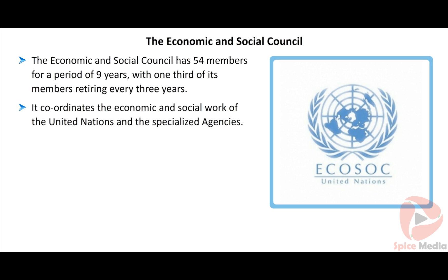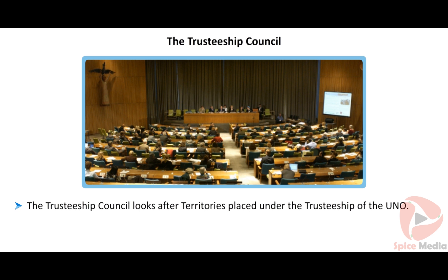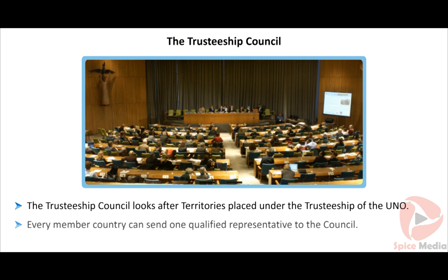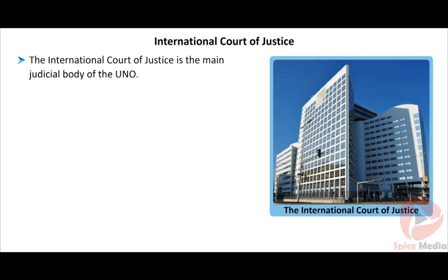The Economic and Social Council coordinates the economic and social work of the United Nations and its specialized agencies. The Trusteeship Council looks after territories placed under the trusteeship of the UNO. Every member country can send one qualified representative to the council.